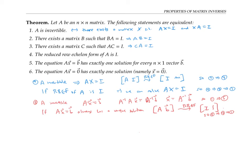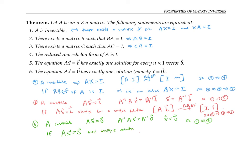Statement six says the equation A times x equals zero has exactly one solution — necessarily the zero vector, since any matrix times the zero vector is the zero vector. If A is invertible, the equation Ax equals zero can be solved by multiplying by A inverse, giving a unique solution. And if Ax equals zero has a unique solution, a similar argument shows A must reduce to the identity matrix, and therefore A is invertible.